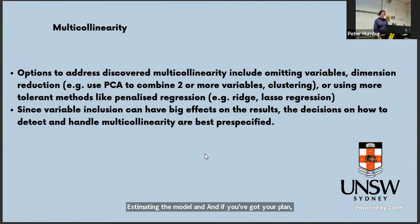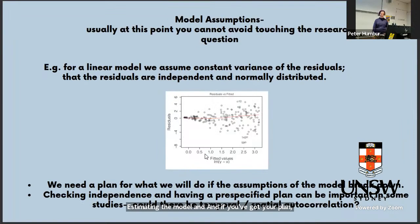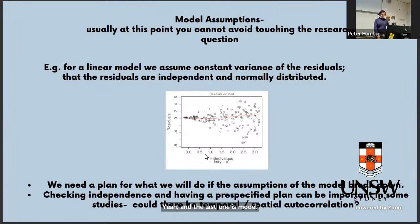Options if you find multicollinearity include omitting variables, using dimension reduction, or using more tolerant methods like penalized regression — lasso or ridge. The last step to consider is model assumptions. You should have a plan for what you'll do if model assumptions aren't met. You might come up with a plan before data collection but then have to make alterations based on what the initial data analysis reveals.